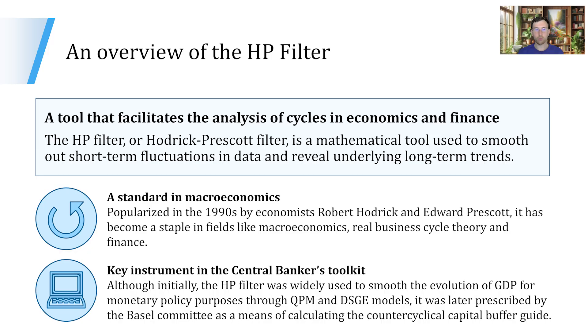The HP filter is a tool that facilitates the analysis of cycles in economics and finance. It is used to smooth out short-term fluctuations in data and reveal underlying long-term trends. The HP filter has become a standard in macroeconomics. It was popularized in the 1990s by economists Robert Hodrick and Edward Prescott, and it became a stable tool in real business cycle analysis and finance. More recently, the HP filter became a key instrument in the central banker's toolkit.